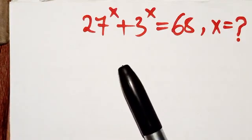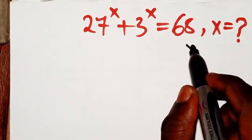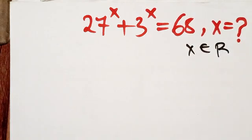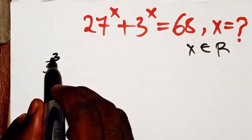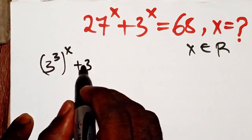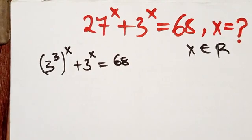Welcome to this tutorial. Today we are going to look at an Olympiad problem — an exponential equation where we want to find the value of X, for X belonging to a set of real numbers. We rewrite 27^x as 3^(3x), so the equation becomes 3^(3x) + 3^x = 68.